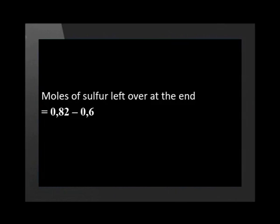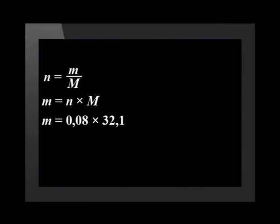We take the 0.82 moles of magnesium that we started with and subtract the 0.6 moles used in the reaction. This leaves us with 0.22 moles of magnesium left over at the end of the reaction. Let us now convert this number of moles to mass using the equation n = m / M. We rearrange and substitute our values in. We get an answer of 2.57 grams, so there is 2.57 grams of magnesium left over at the end of the reaction.